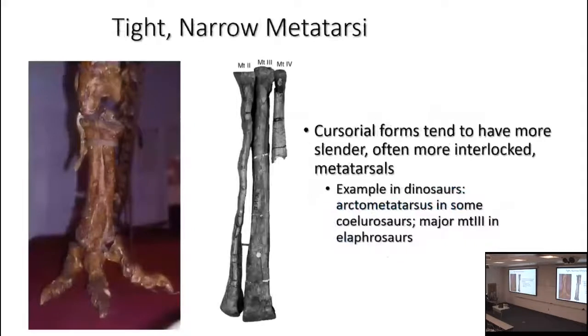That's where I'll stop for now. We will pick up next time by looking at the expression of these sorts of things in different groups of dinosaurs and get to the answer of what were the fastest dinosaurs, and then we'll move on to other aspects of dinosaur biology.